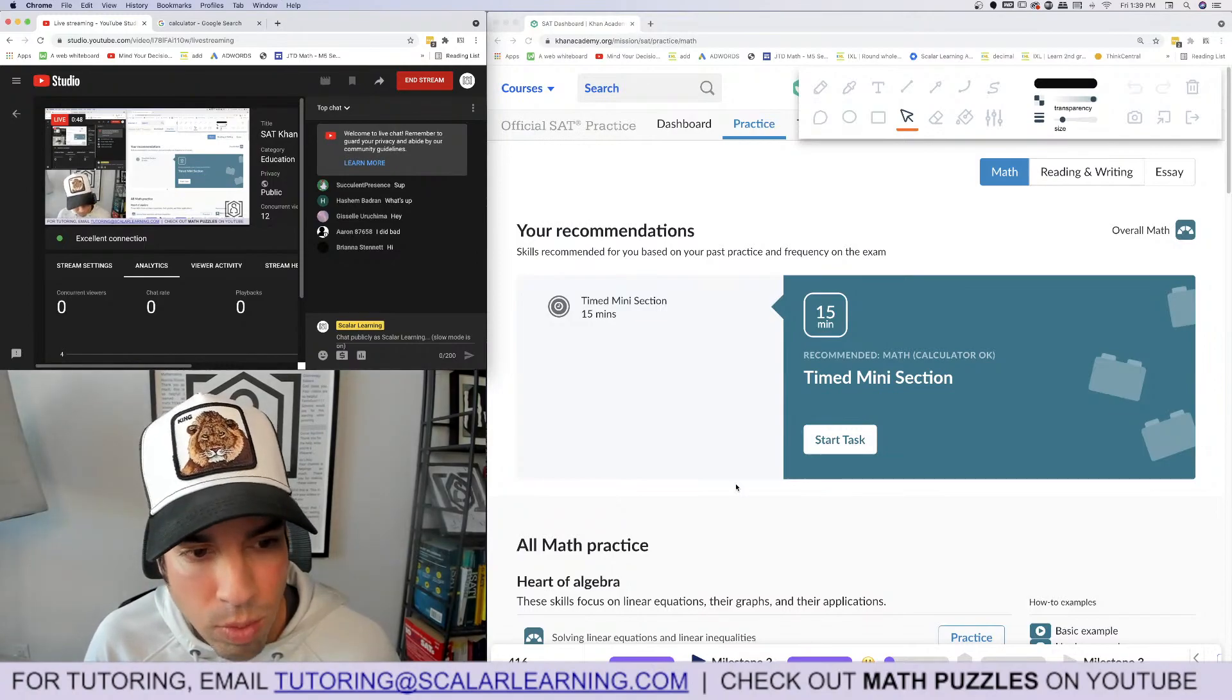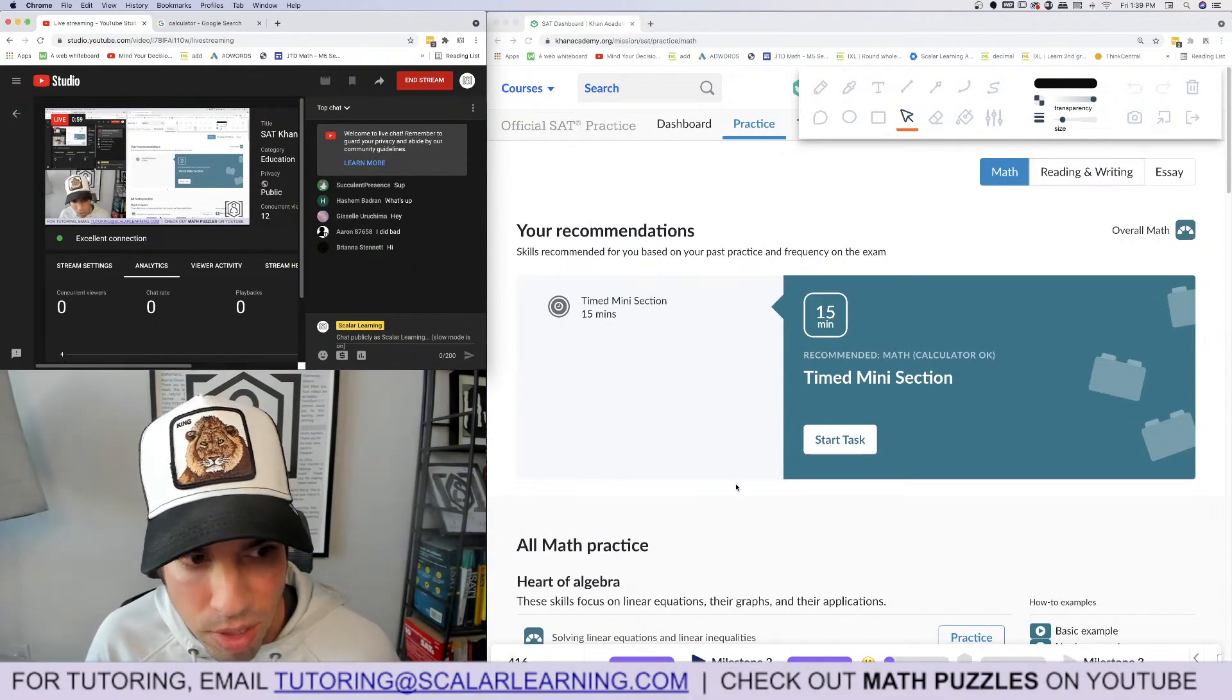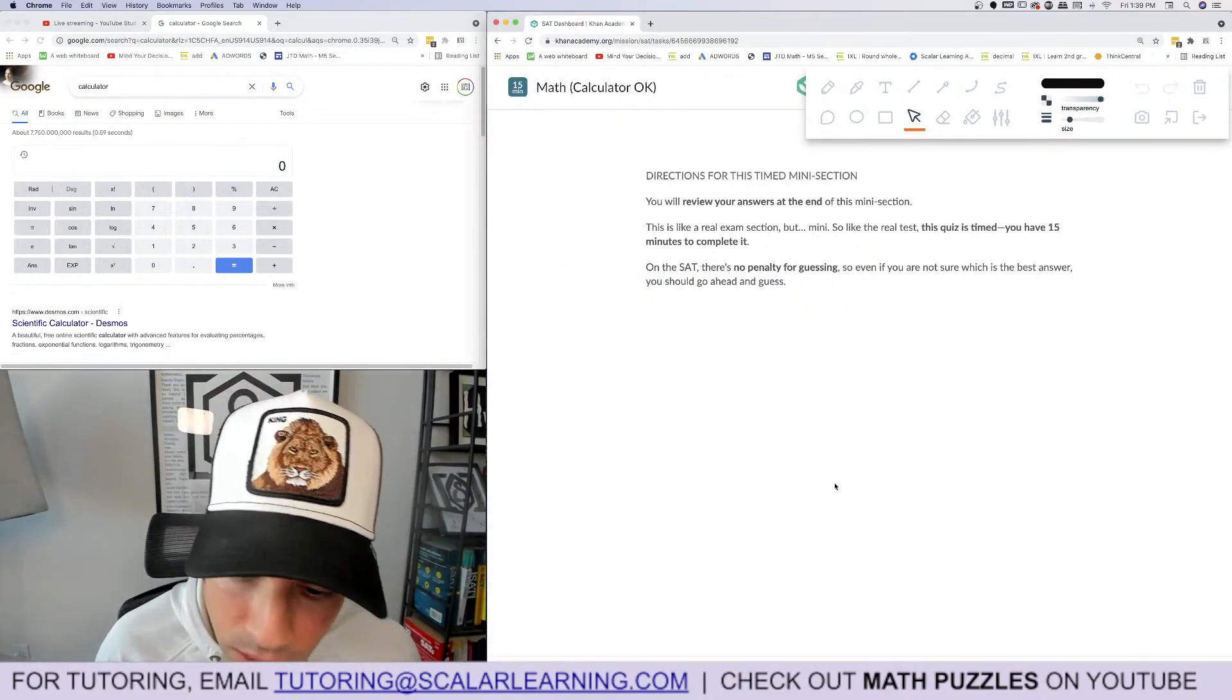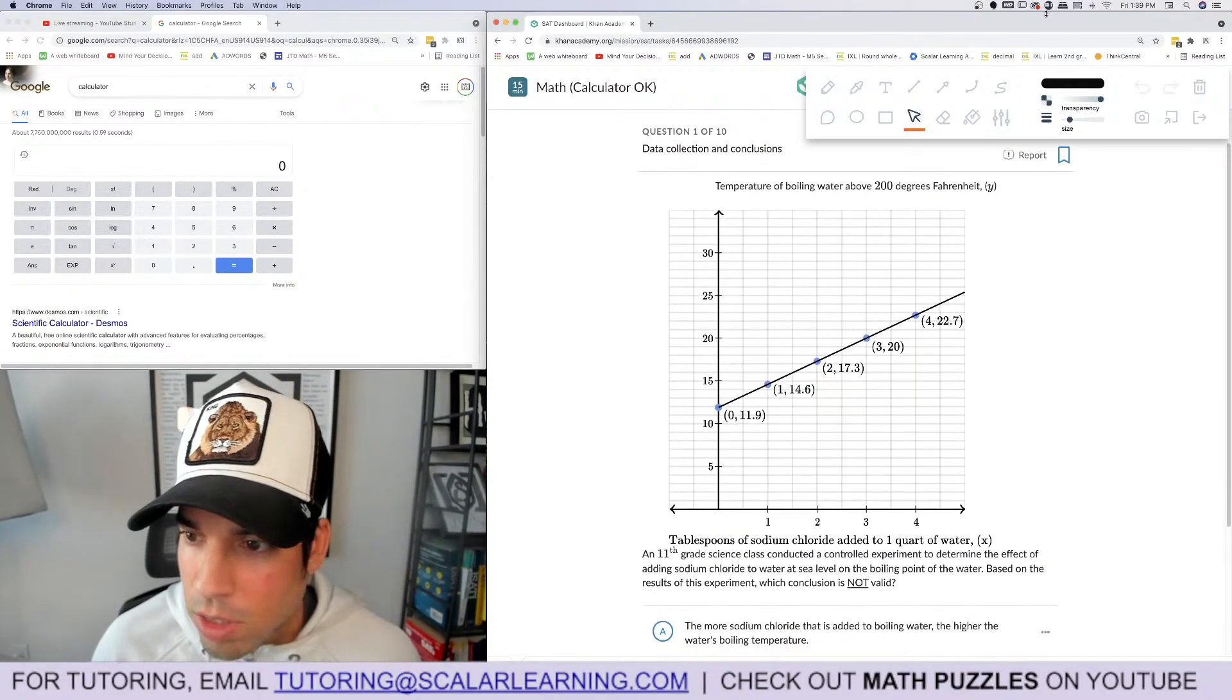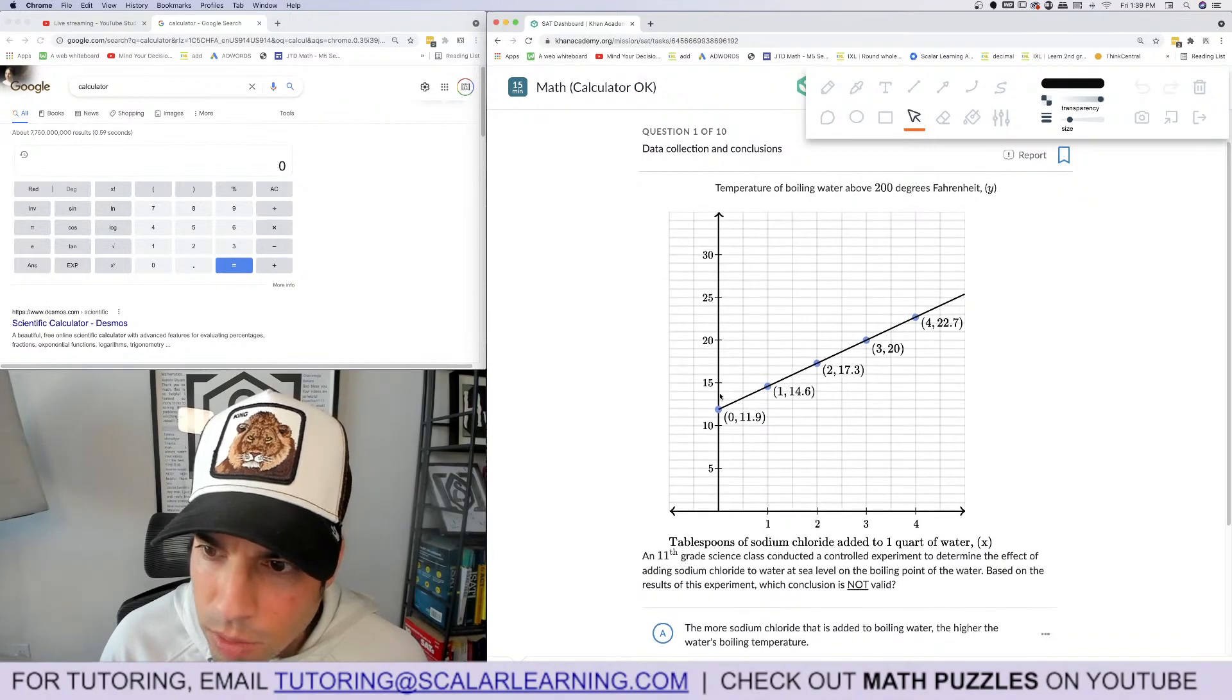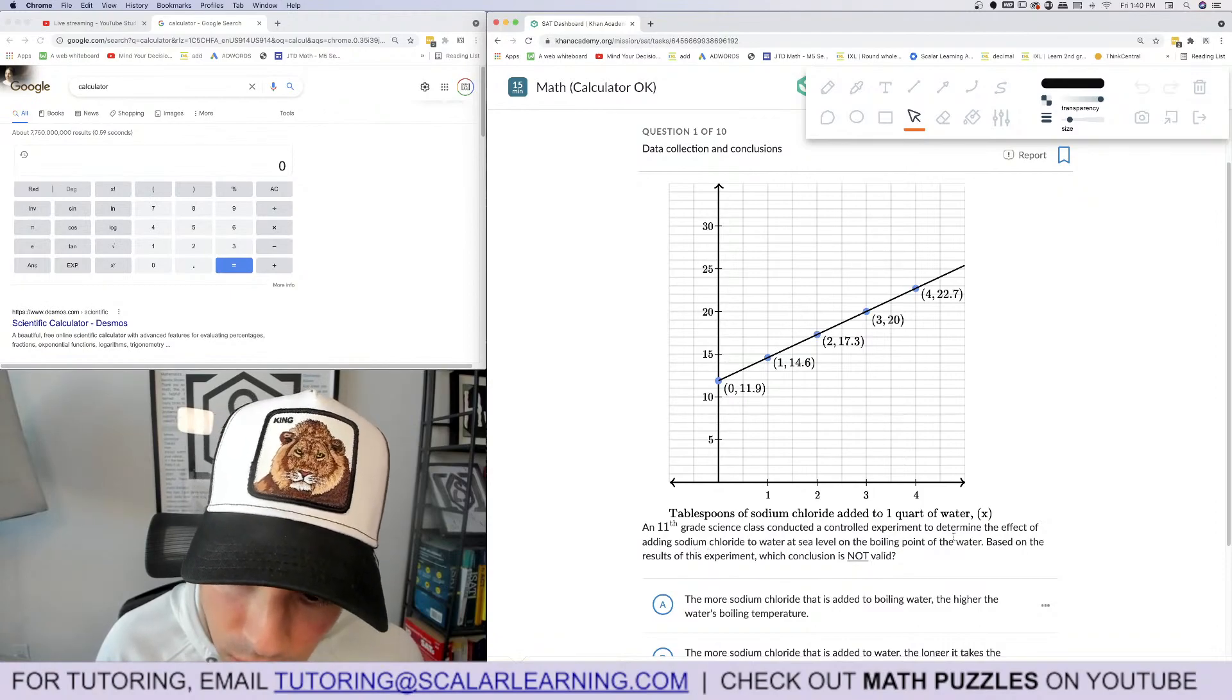What's up Brianna, Aaron, Giselle, Hashem, and Succulent Presence. All right, without further ado let's do this thing. This is a calculator section so I'm going to pull up my calculator here and we're going to start in three, two, one, let's go. Data collection conclusions - let me make sure I have the right zoom here.